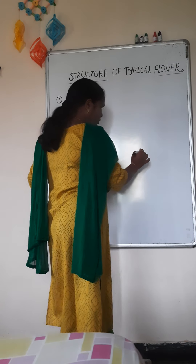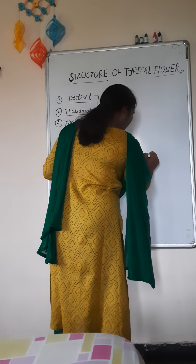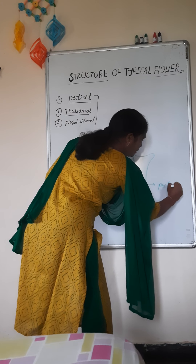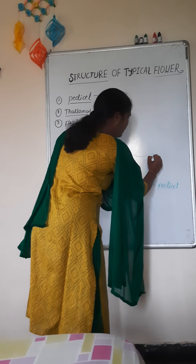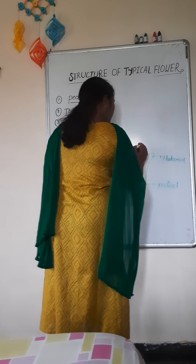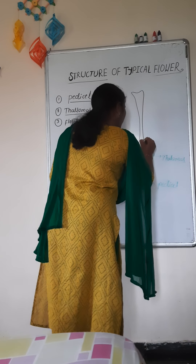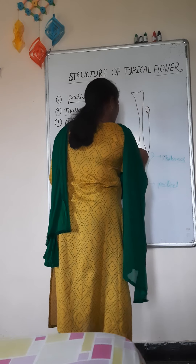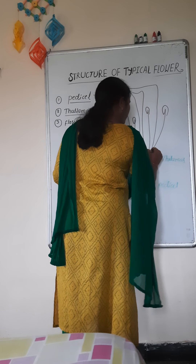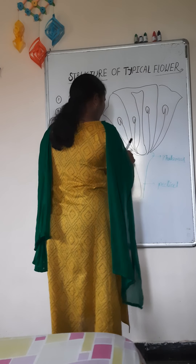We will discuss the detailed structure of the flower. How to draw this flower? It is a very easy method. First, draw the thalamus and pedicel — this is the pedicel part, the stalk of the flower. This part is called the thalamus. Then draw the last and innermost whorl called the gynoecium. The individual part is called the pistil or carpel. This is the androecium. This is the corolla. And the next part is the calyx.